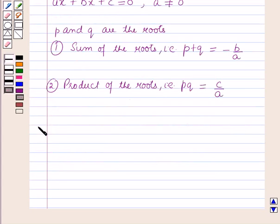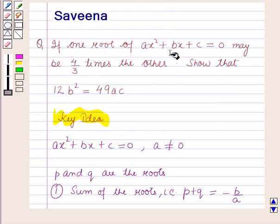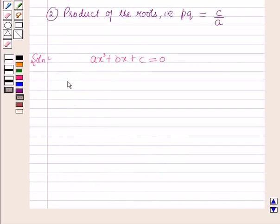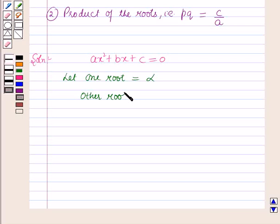Now we will start with the solution. The equation is given as ax² + bx + c = 0. It is given in the question that one root of this equation is 4/3 times the other. Let one root of the above equation be equal to alpha; then the other root, according to the given condition, will be equal to 4/3 times alpha, that is 4α/3.